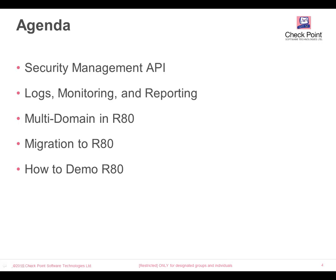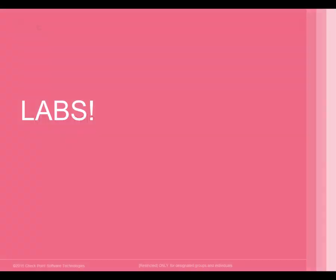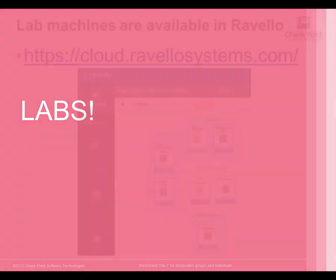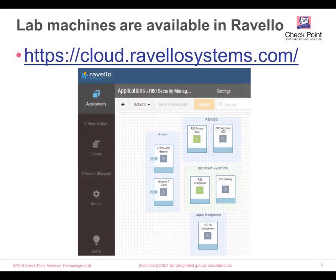In this training, we have included hands-on labs to give you more hands-on experience with R80 security management. Those virtual machines are available as blueprints inside the Ravello cloud. If you go to cloud.ravellosystems.com and log in with your Checkpoint credentials, you'll get access to the R80 security management blueprint. If you don't have access to that, please contact me and I'll give you access.